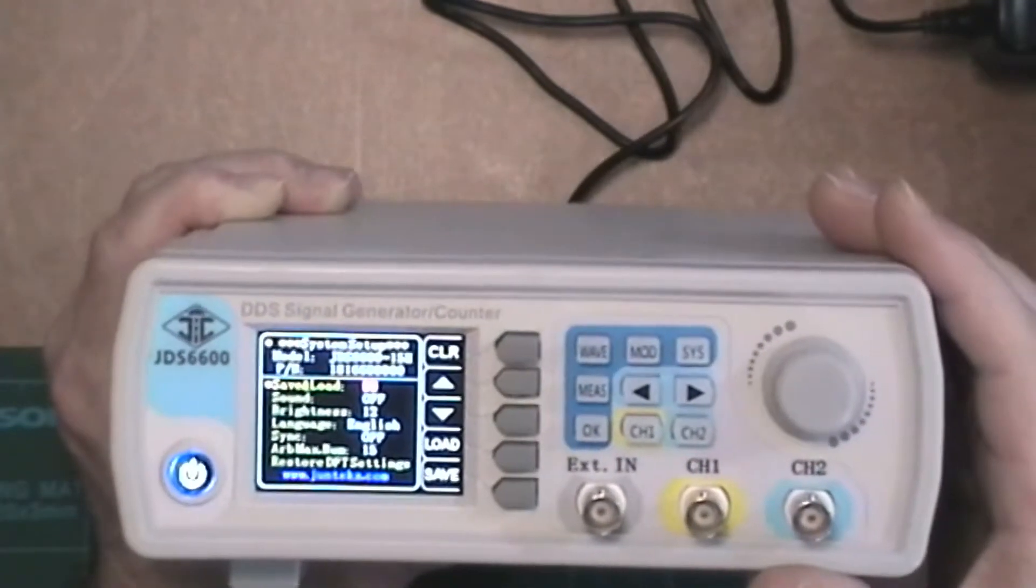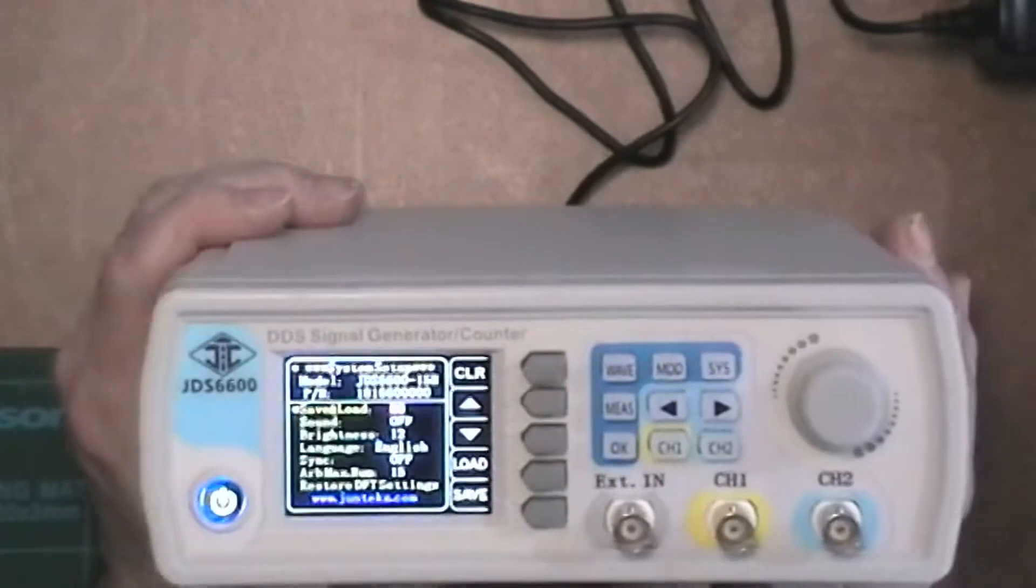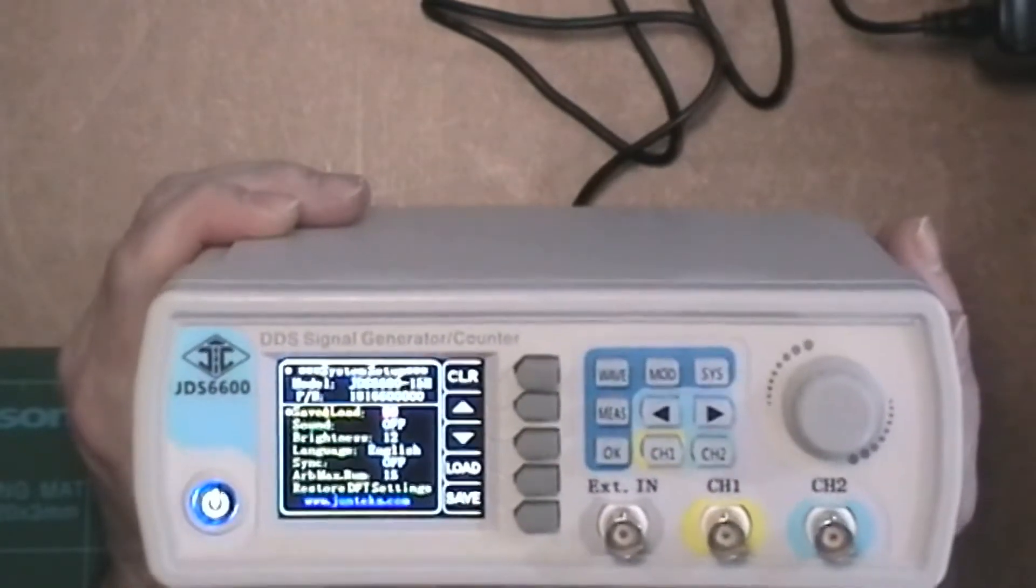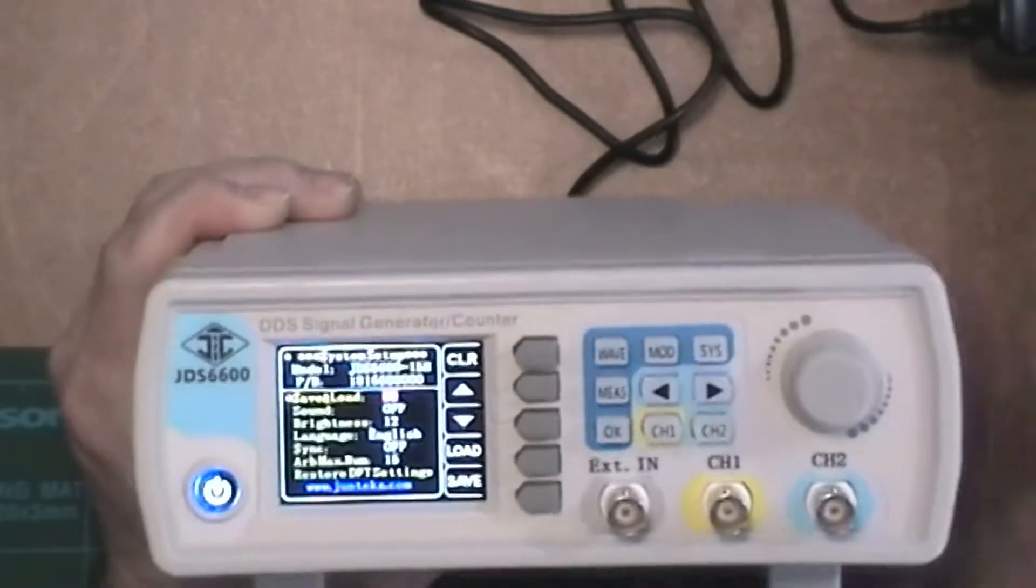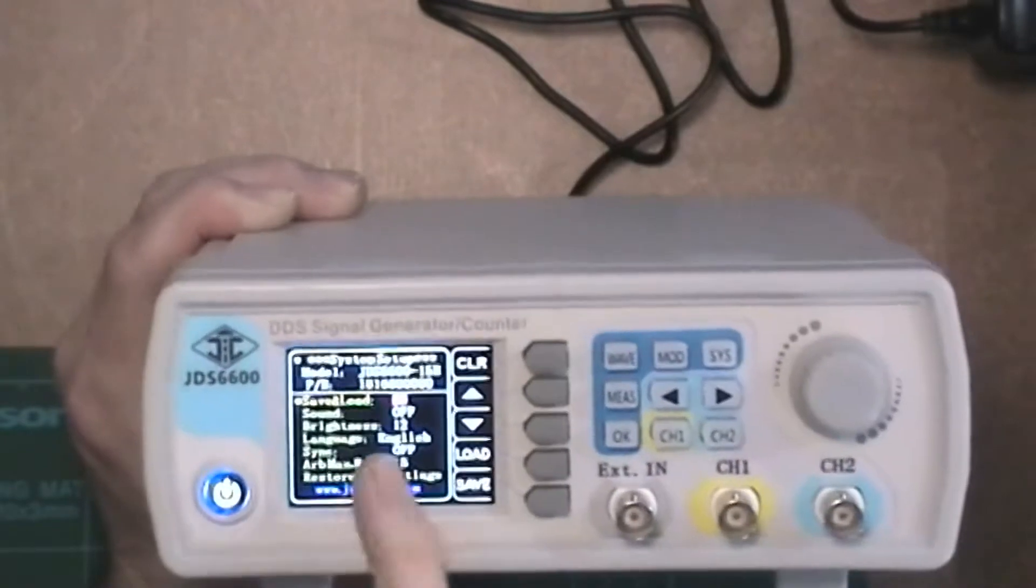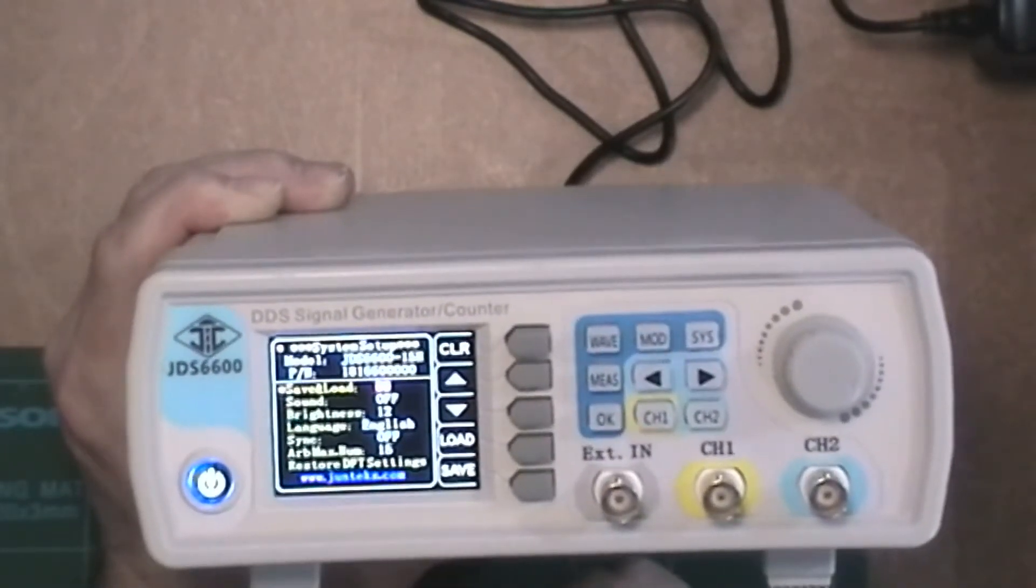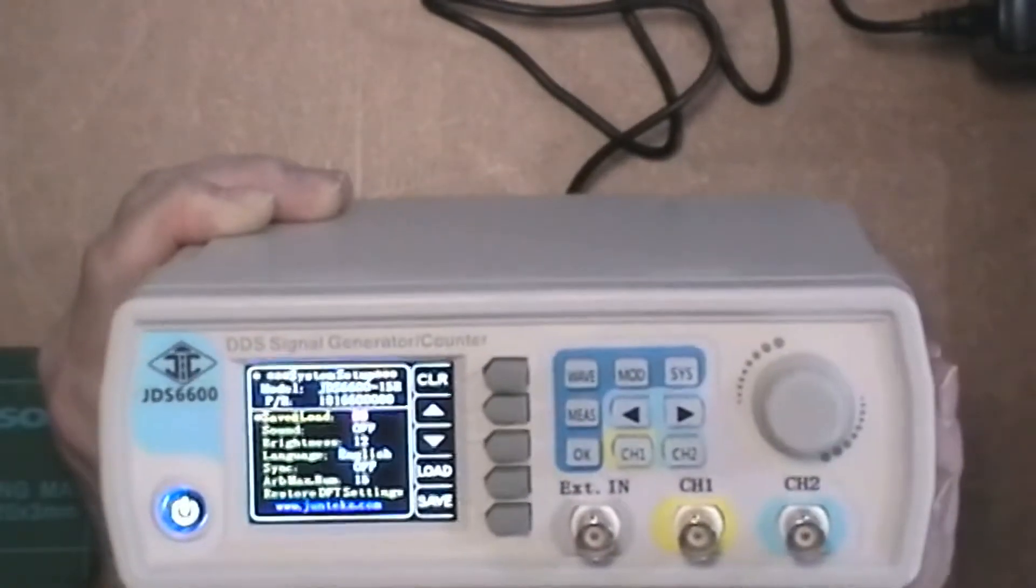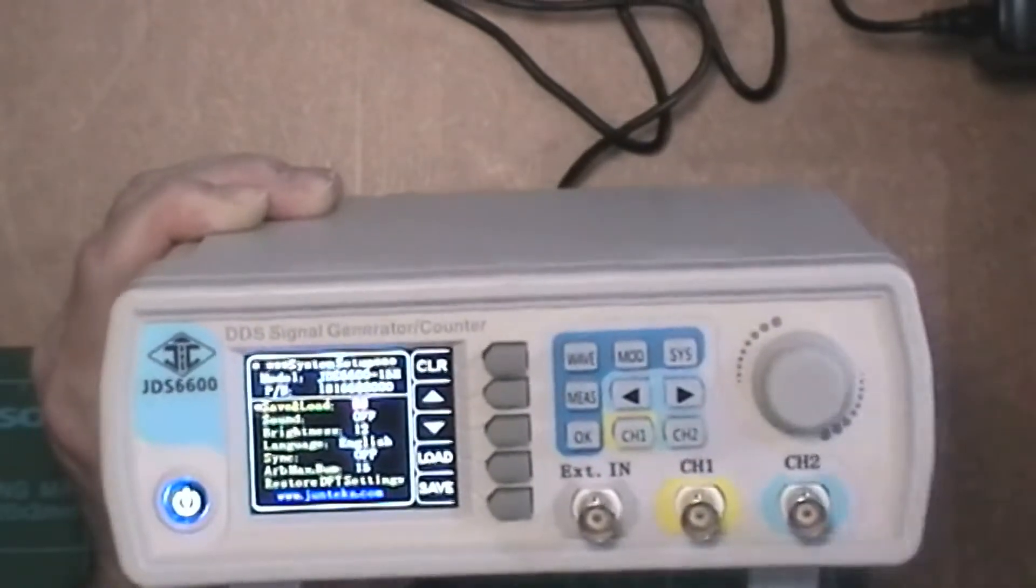And then we've got system. Just tells you what it is. It's a JDS 6600, 15 megahertz. It's got 15 megahertz. But it's not, there you go. Save and load, I presume it must be how many waveforms I've saved in there. So at the moment I've got none. Sound, brightness, language, sync. Sync is off for whatever that's for. Well there you go.